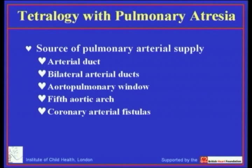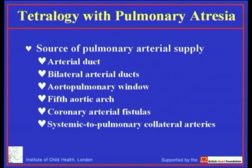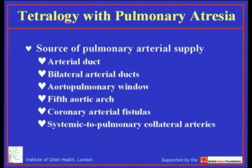In other rare instances, fistulous communications between coronary arteries can feed pulmonary arterial pathways. Without question, however, the most important source of pulmonary arterial supply is the systemic to pulmonary collateral arteries. It is because of these collateral arteries that tetralogy with pulmonary atresia stands as its own subset of pulmonary atresia with VSD. In the other variants — where segmental connections are those of transposition, congenitally corrected transposition, or isomerism — systemic to pulmonary collateral arteries are rare, but in almost all instances when they are found, the intracardiac anatomy is that of pulmonary atresia.